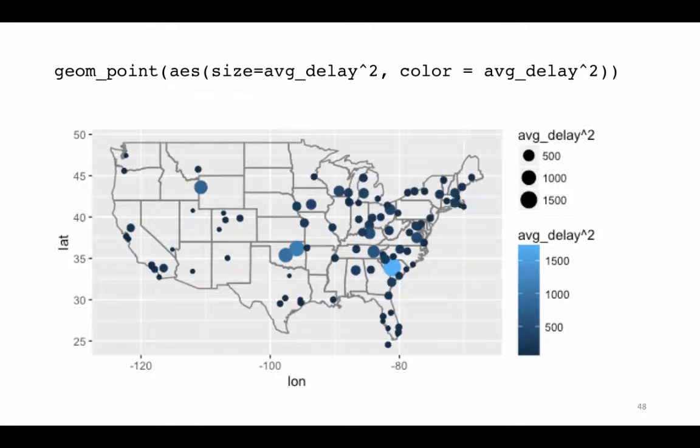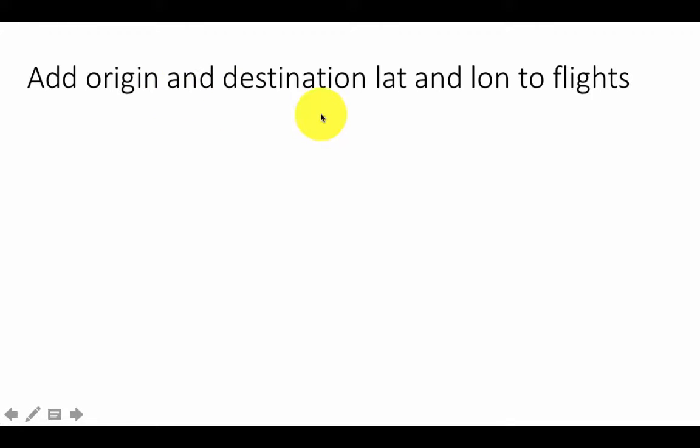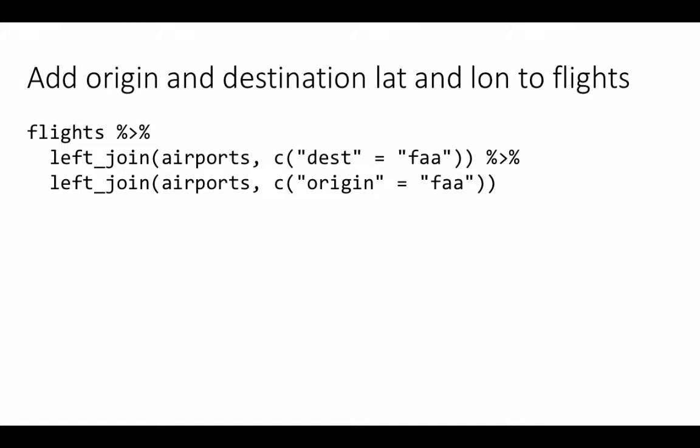Let's look at one more operation to do with latitudes and longitudes. We want to add origin and destination latitude and longitude to flights. The flights table right now has the origin airport and the destination airport, so what we want to do is add the origin and destination latitude and longitude to the flights, which means we'll have to connect the flights table to the airports table and get the airport latitude and longitude.